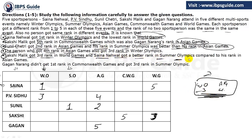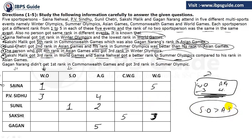Sania Nehwal got a better rank in Summer Olympics compared to her rank in Asian Games. Looking at the Asian Games column, we already have 4, 2, and 5, so we need 3 and 1. Rank 3 can't go to Sania because she already has 3 in her row. So Sania gets rank 3 in Asian Games and rank 1 must go to Sakshi. Since Summer Olympics must be better than rank 3, and rank 1 is already taken in Winter Olympics, Sania gets rank 2 in Summer Olympics. This is the basic logic of Sudoku.